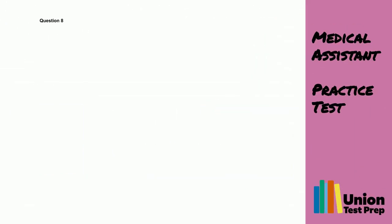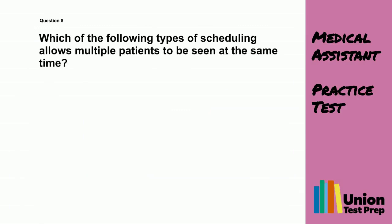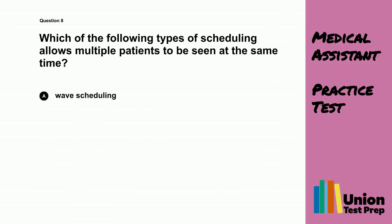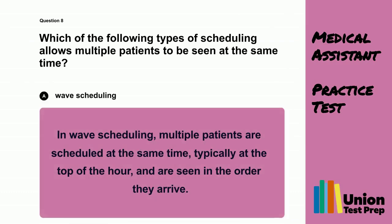Question 8. Which of the following types of scheduling allows multiple patients to be seen at the same time? A. Wave scheduling. B. Open hours. C. Double booking. D. Time specific. The correct answer is A, Wave scheduling. In wave scheduling, multiple patients are scheduled at the same time, typically at the top of the hour, and are seen in the order they arrive.